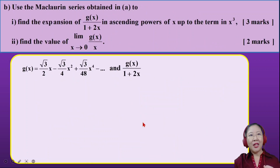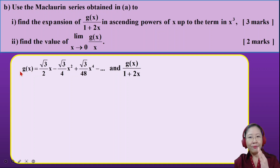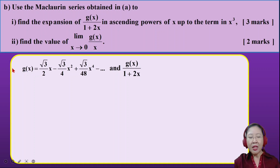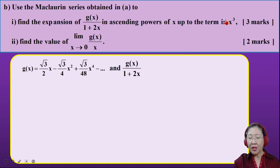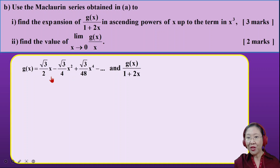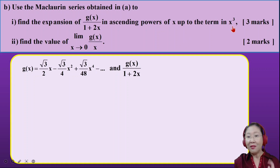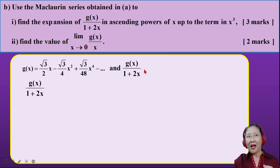Let's do question B. Make sure you label your parts — write question A, part one; question B, part one, etc. In this second part, they ask you to find this expression in ascending powers of x up to x cubed. We already have the derivatives from before. They needed until power of three, but our calculation just now is until power of four — so please be careful. Take note of what they ask inside the question; it is actually a trap. They can deduct a mark if you have extras.